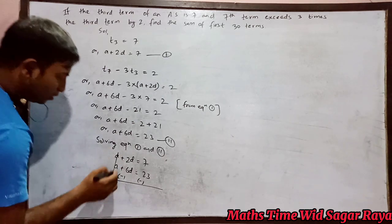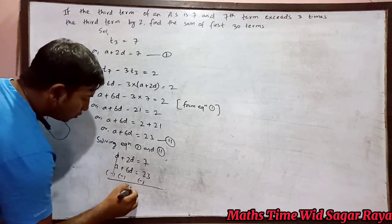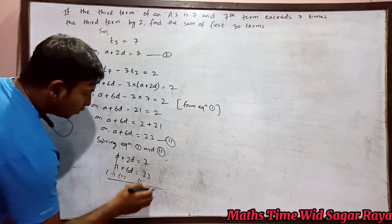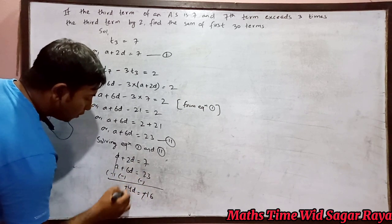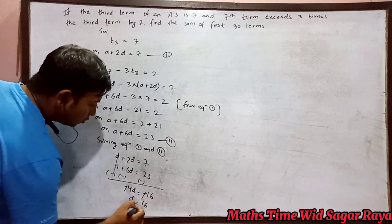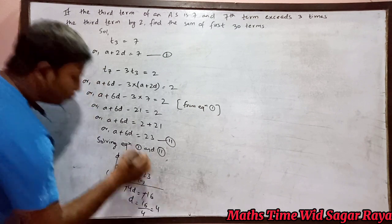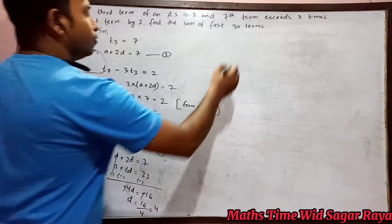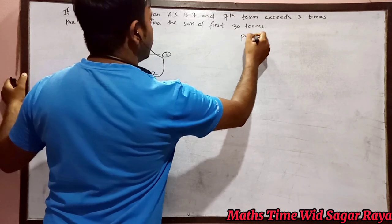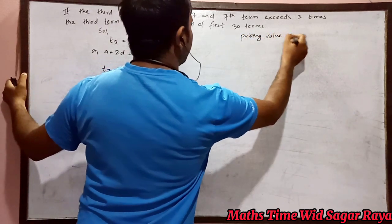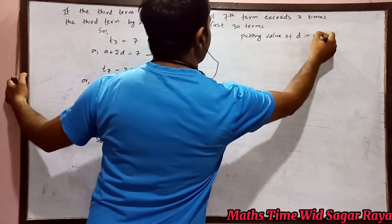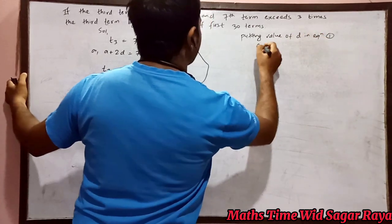2d minus 6d will be minus 4d. 7 minus 23 will be minus 16. Minus and minus cancel, so 16 by 4 equals 4. So d equals 4.